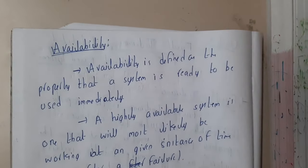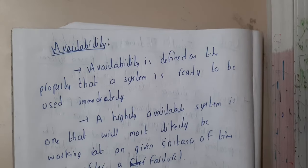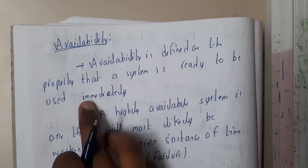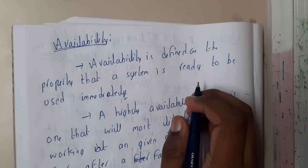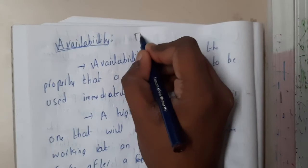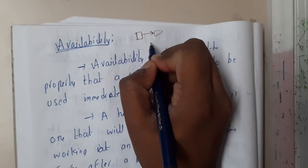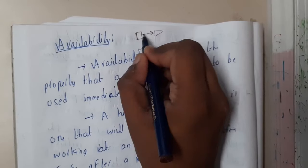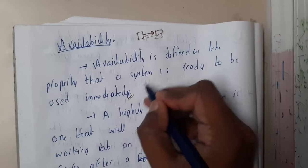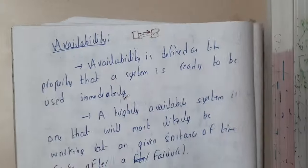Availability is defined as the property that a system is ready to be used immediately. For example, when you open Google Chrome and type google.com, the request is sent to the server — through your ISP, DNS, and so on — and the server replies instantly. That fast response means the server is always available for service.